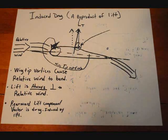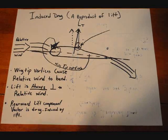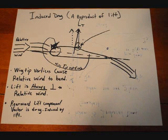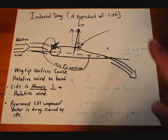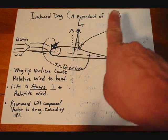Wing tip vortices cause relative wind to bend. Lift is always perpendicular to relative wind. As the relative wind bends downward, like I've drawn it here, the vector of lift is shifted aft.